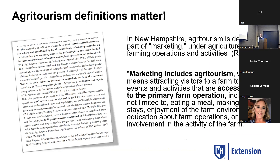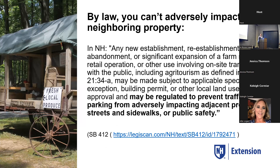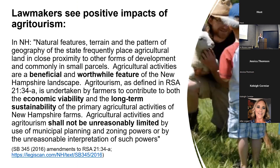Definitions of agritourism matter — they make a difference with zoning, liability coverage, and taxation. In New Hampshire, agritourism falls under marketing and is considered an accessory use to the primary farm operation. It's also stated that agritourism cannot adversely impact neighboring property, yet lawmakers recognize it as a vital way to celebrate the state's rural heritage and create economic opportunity.